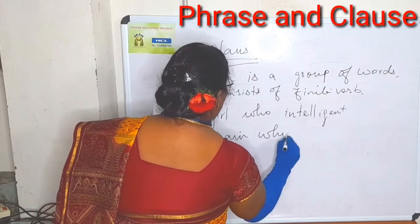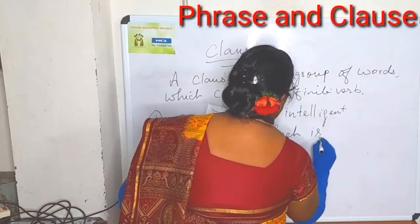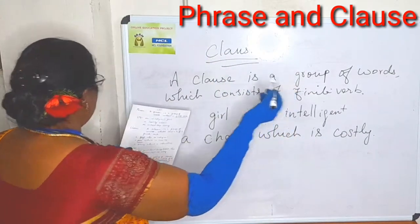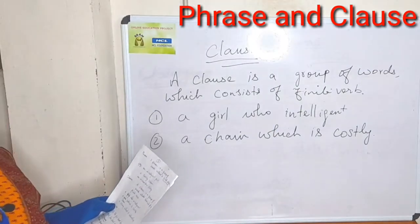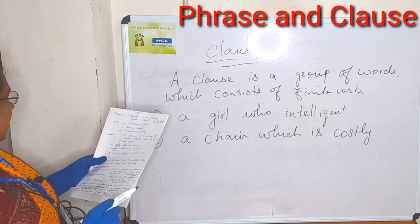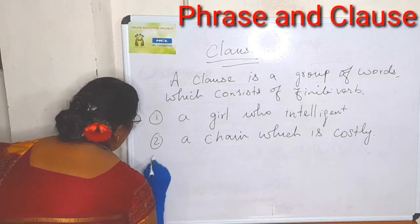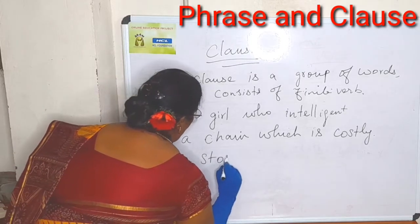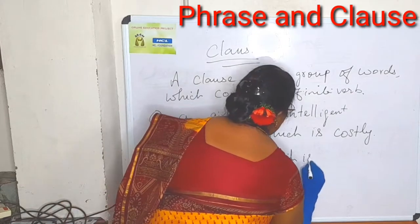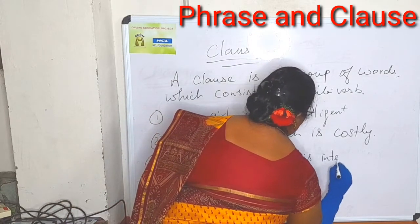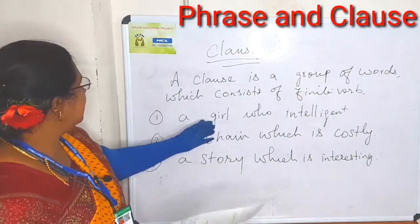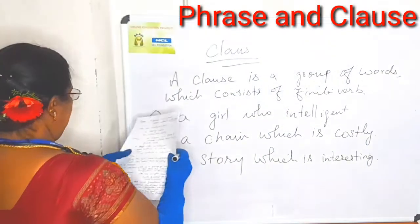Because only half of the sentence is given — same as what I gave for phrase. Here, in the clause sentences, only half of the sentence is given. Third one: a story which is interesting. These kinds of sentences are referred to as a clause.